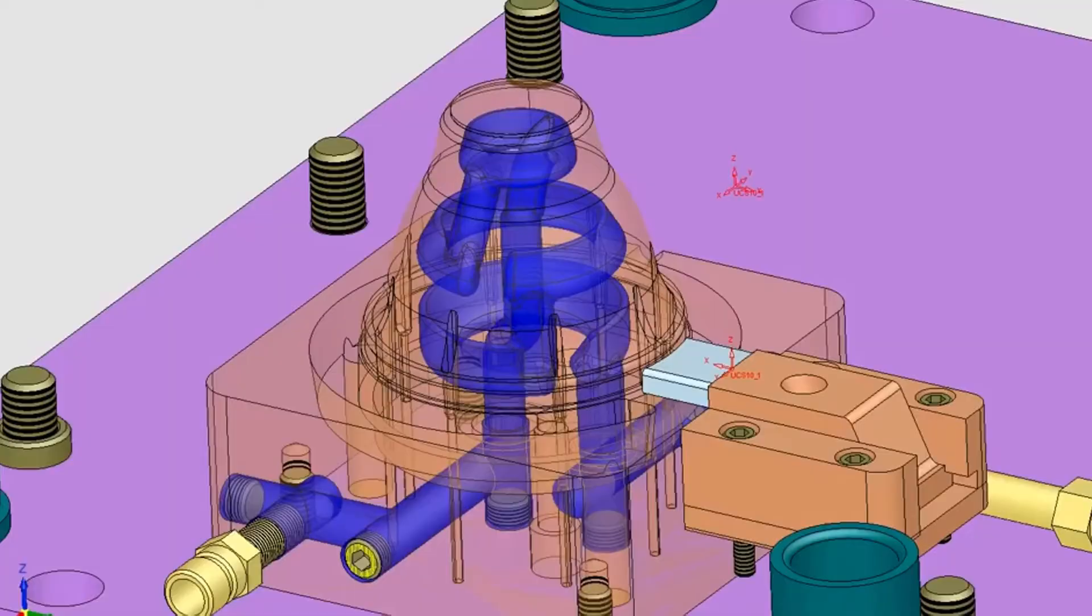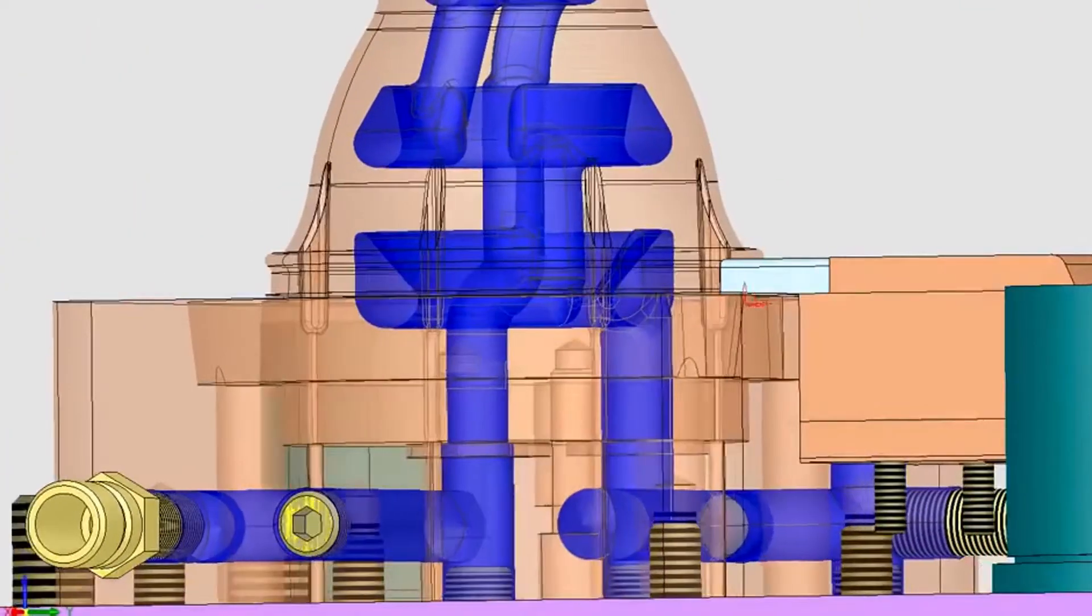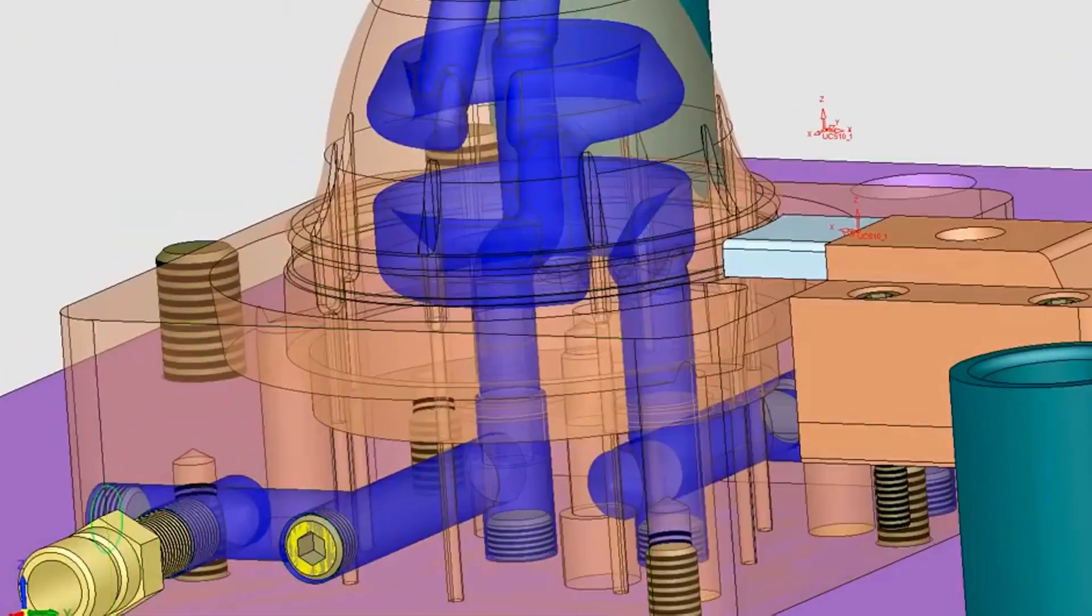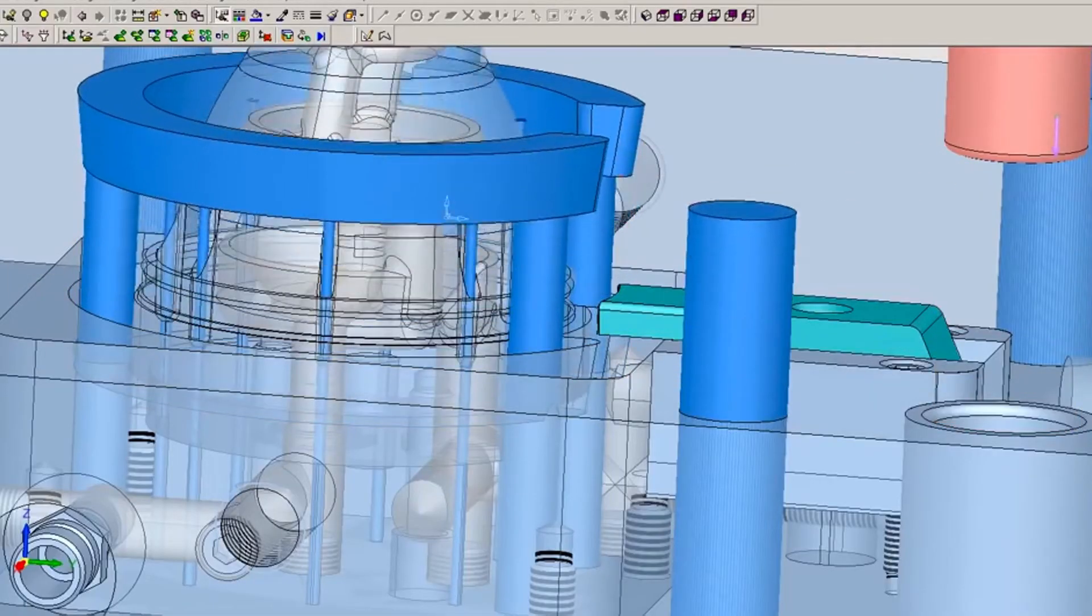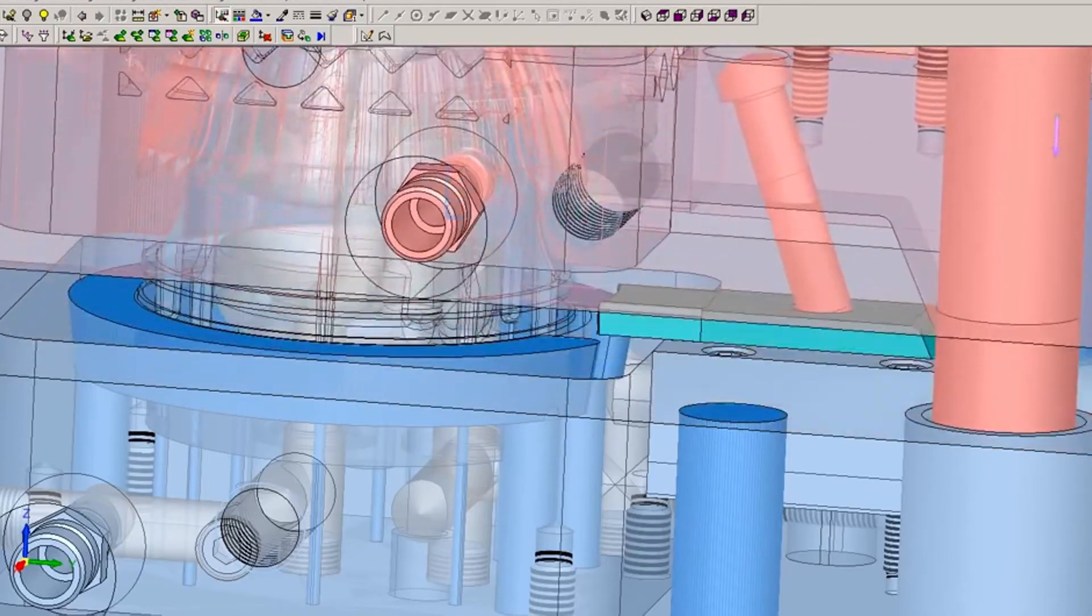As he snakes that water line through the core, he may need to change its shape, its diameter, he may need to check to see if it's going to possibly come close to an ejector pin, all the while he can be doing that, and checking to make sure that it's within a minimum condition of material.